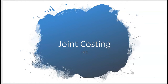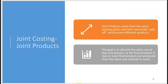Let's look at joint costing. With joint costing, we're making two products from the same starting point. Two different products called joint products are being made from the same starting point. They eventually split off and become individual joint products, but in the beginning they have what's called joint cost because they come from the same starting point. If two or more final products are produced from the same raw material or the same input, we have joint cost.